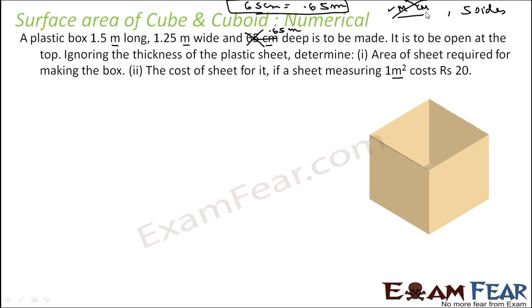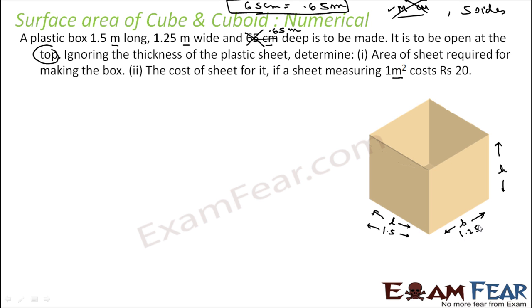Since most units are in meters, let's convert: 65 centimeters becomes 0.65 meters. Now all units are in meters. By convention, the length is 1.5 m, breadth is 1.25 m, and height is 0.65 m. The top is open, so one face — length × breadth — is missing.